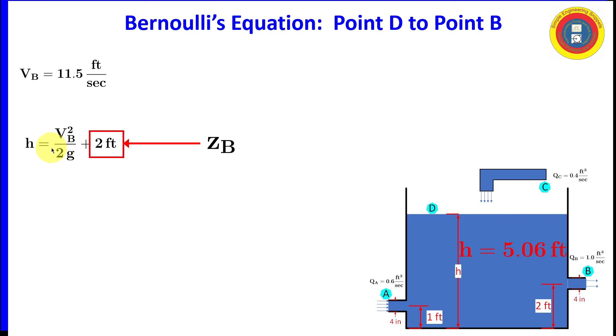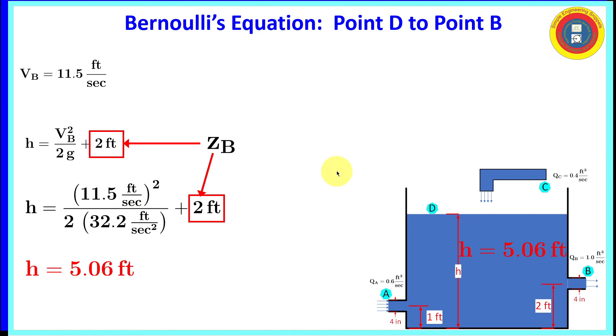So going back to our simplified form of Bernoulli's equation, we have everything we need to solve for the height. And substituting in the values and the units, and looking at the units in the numerator of this term, we have feet squared per second squared, divided by feet per second squared. So this comes out to be feet, so that's good. And we obtain our final value of 5.06 feet.